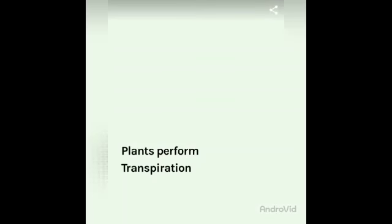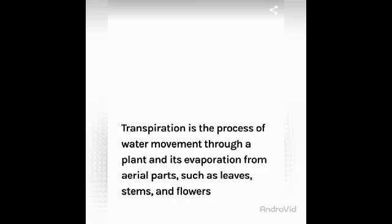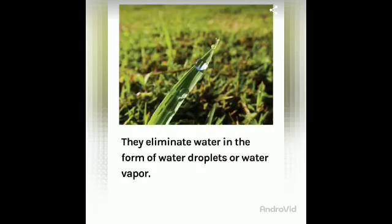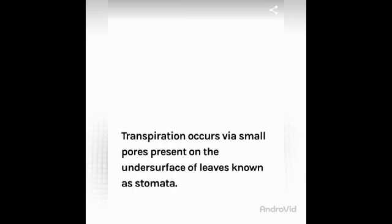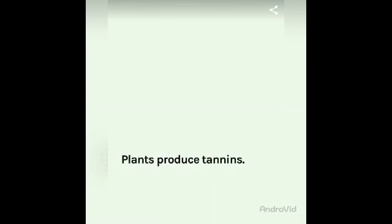Plants also perform transpiration. Transpiration is the process of water movement through a plant and its evaporation from aerial parts such as leaves, stems, and flowers. Plants eliminate water in the form of water droplets or water vapour. This process occurs because plants take in more water than they need for their biochemical processes. Transpiration occurs via small pores present on the undersurface of leaves, known as stomata.